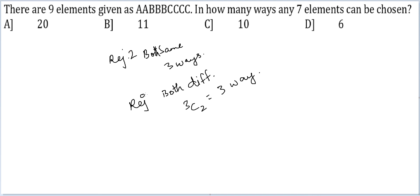So rejecting two - in how many ways can you reject two? You have three ways here, you have three ways here. You can reject two in six ways. So in how many ways can you select 7 elements? You can select in six ways.